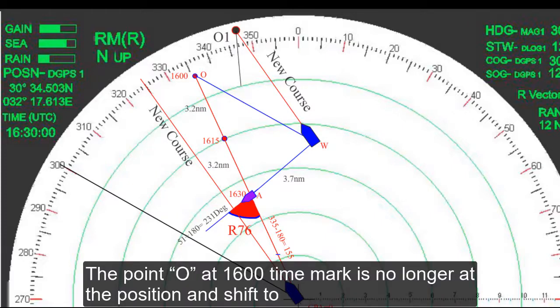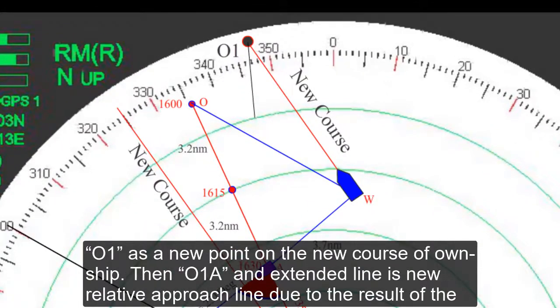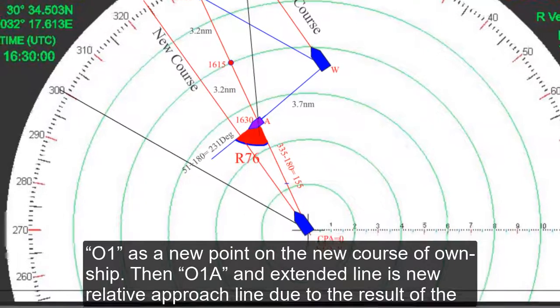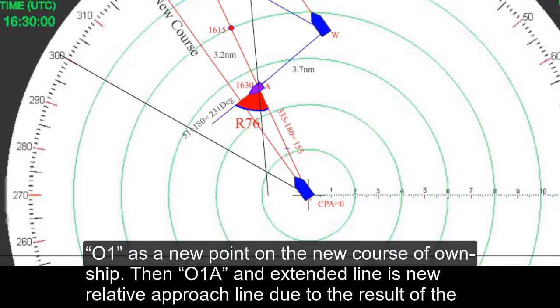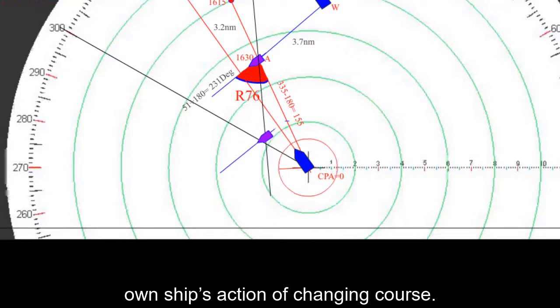The point O at 1600 time mark is no longer at the position and shifts to O1 as a new point on the new course of own ship. Then O1-A extended line is new relative approach line due to the result of own ship's action of changing course.